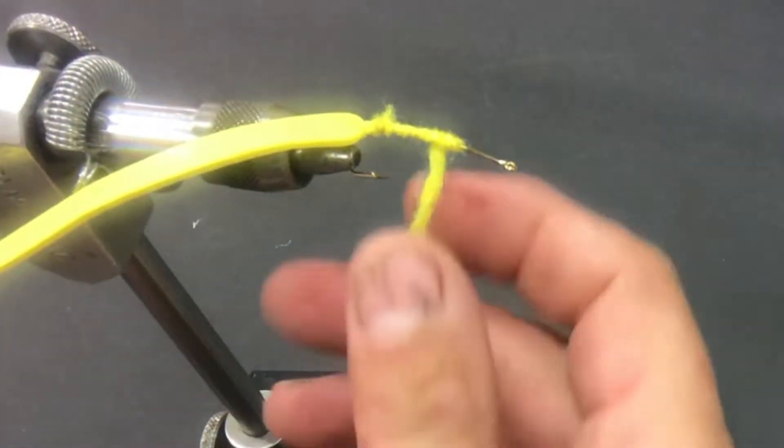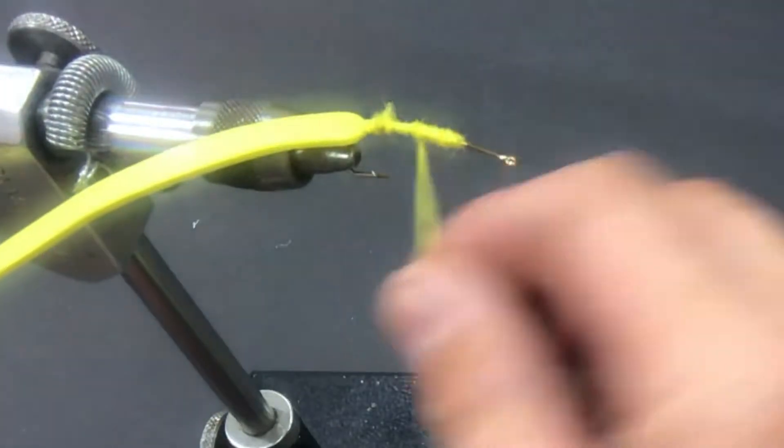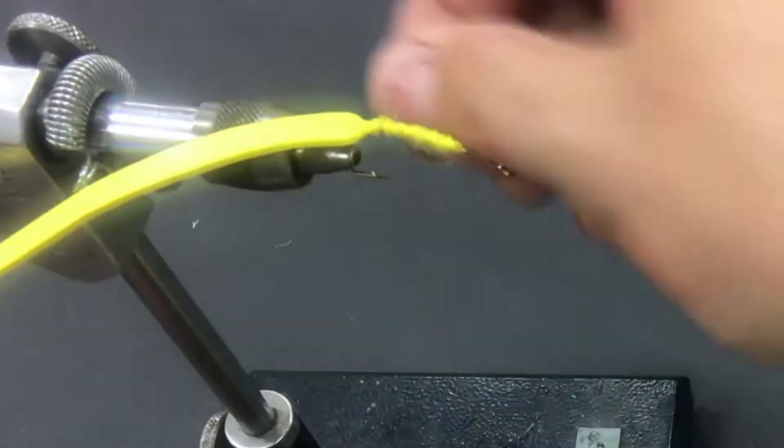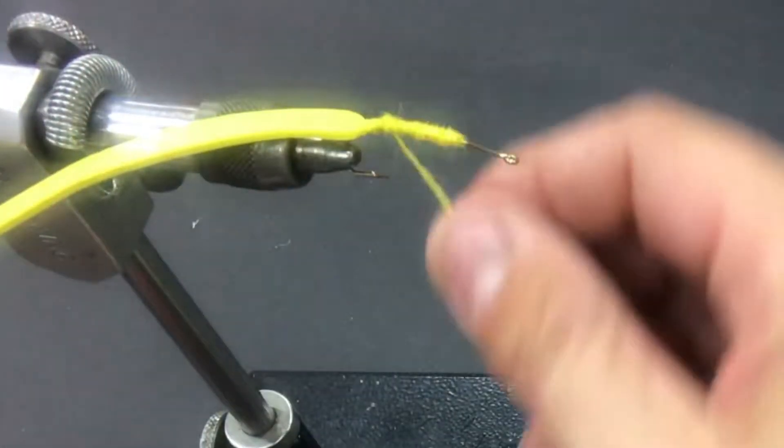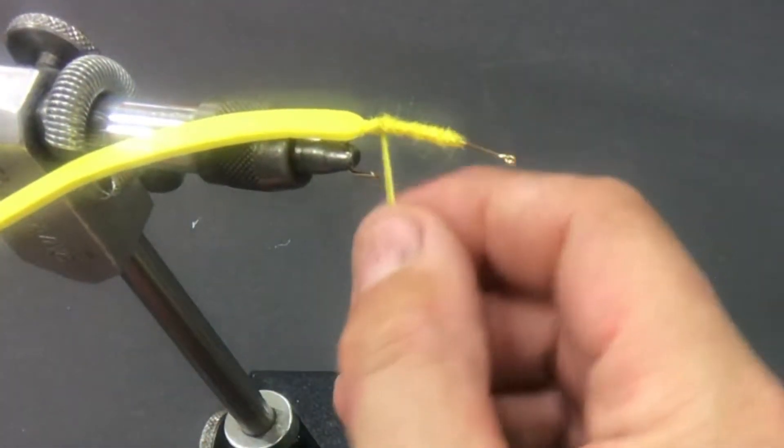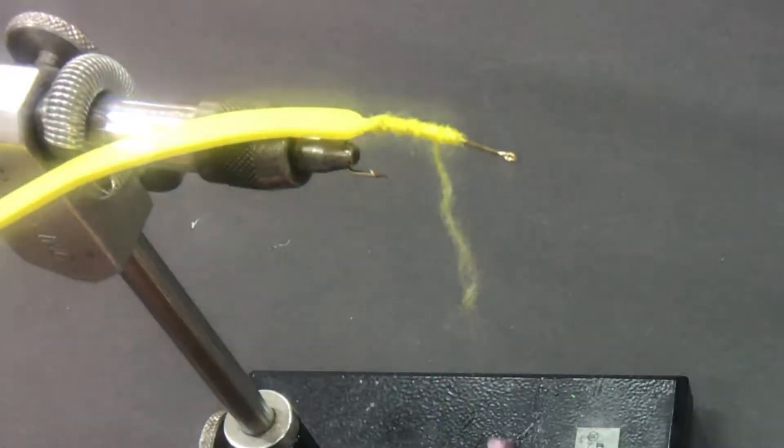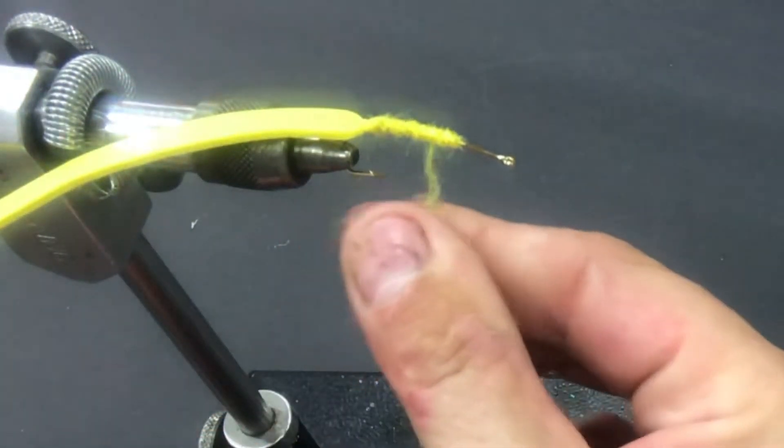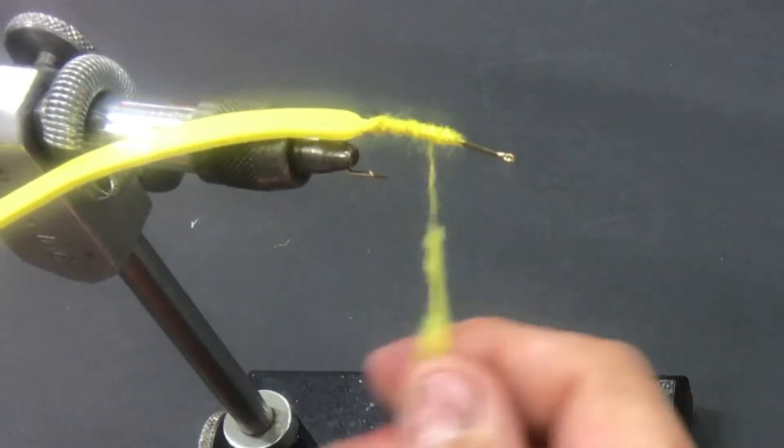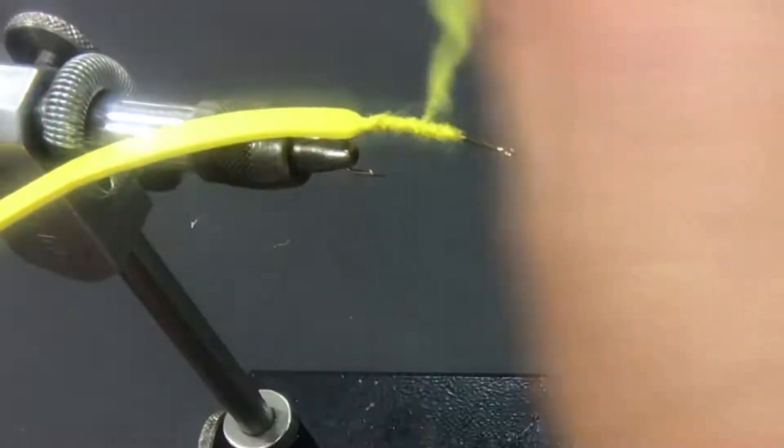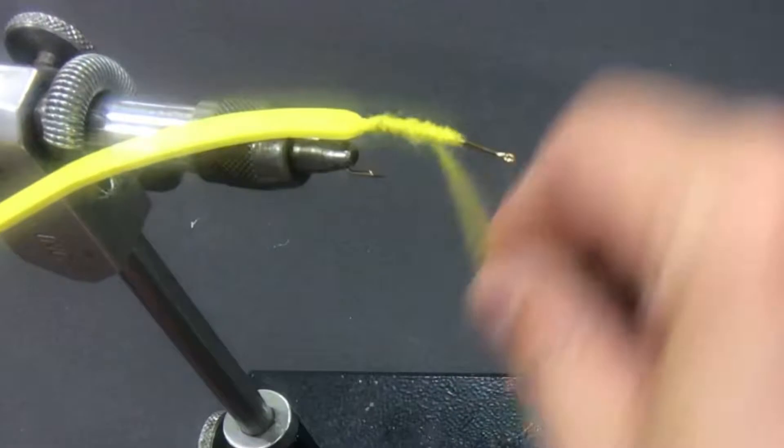I'm gonna go about three-quarters of the way up, then come back. What I'm aiming for is a cigar-shaped body. I want it a little fatter in the middle, a little tapered on the end. So I don't quite have enough dubbing, so I'm gonna go ahead and grab a little bit more. Just spin it on the thread and then just feed it off, much faster than normal dubbing.